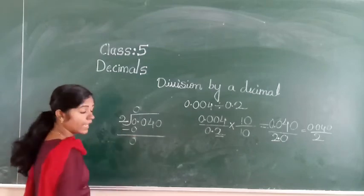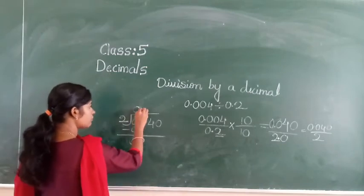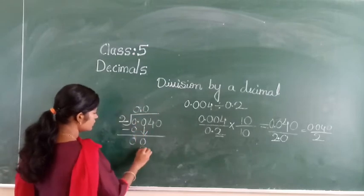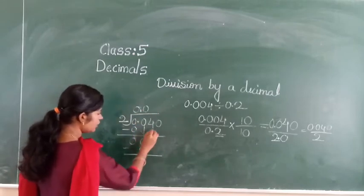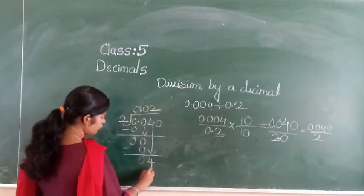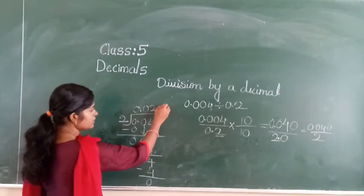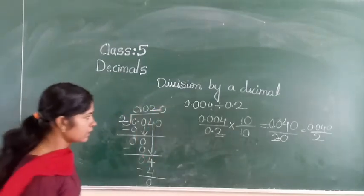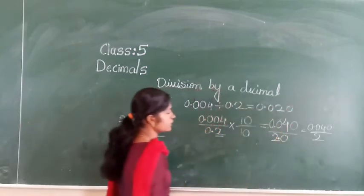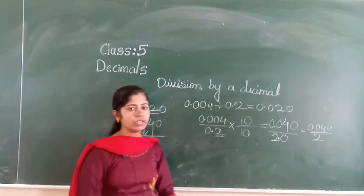Next take 4 down — then 2 twos are 4. 4 minus 4 is 0. So what is the answer here? 0.020. If you write 0.02, that is also correct. If you write 0.020, that is also correct. So this is how you divide a decimal by a decimal.